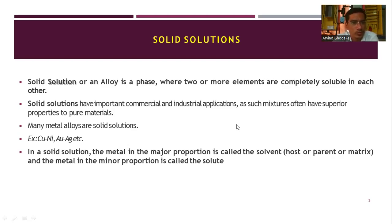Copper and nickel are two metals that, when combined, form a solid solution. Au-Ag is also an example of a solid solution. In a solid solution, the metal in the major proportion is called the solvent — also called the host, parent, or matrix. The metal in the minor proportion is called the solute. So the maximum content is the solvent and the minimum content is the solute.